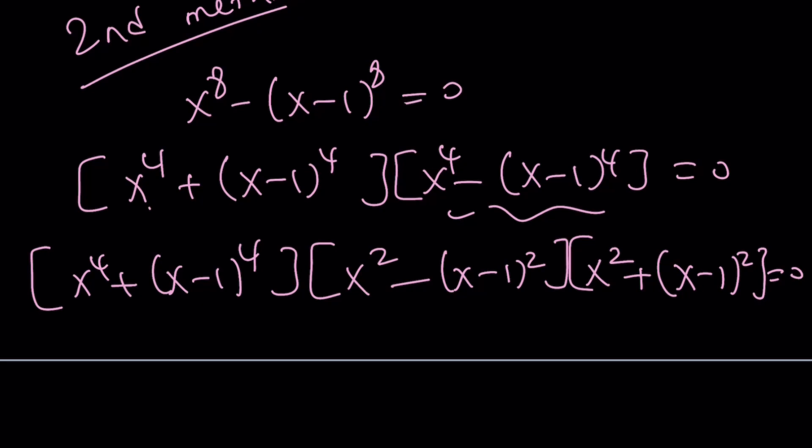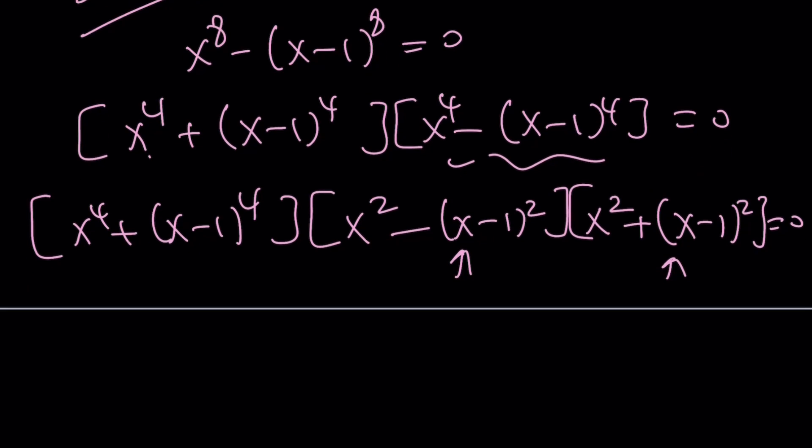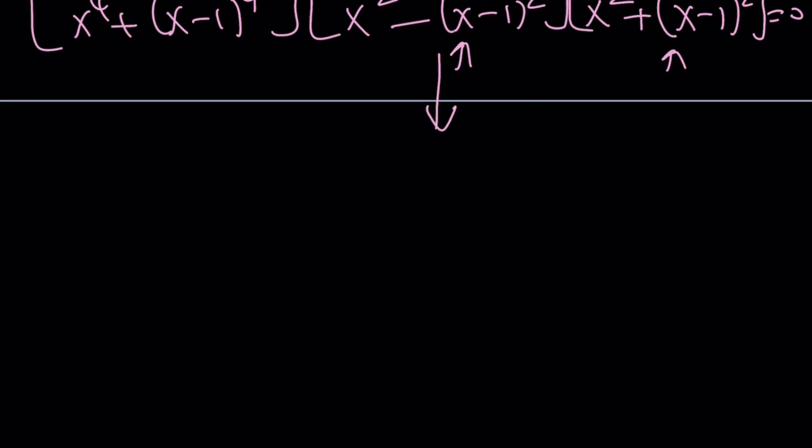This can be written as x squared minus x minus 1 squared times x squared plus x minus 1 squared. Great. Now we got a quadratic, a linear, and a quartic. But the quartic can be handled very easily. Let's simplify these first. When you subtract you're going to get 2x minus 1. And this one is going to give you 2x squared minus 2x plus 1. Those are easy to handle. And the other one, this one, we can call this y.